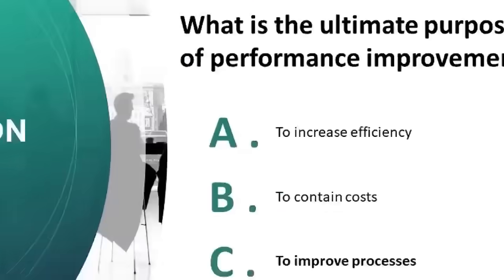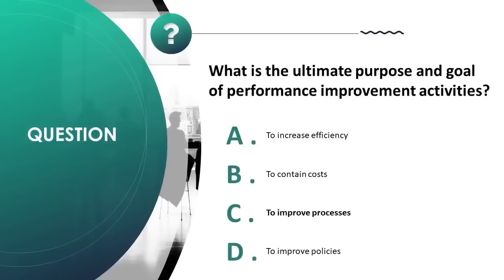What is the ultimate purpose and goal of performance improvement activities? A) to increase efficiency, B) to contain costs, C) to improve processes, D) to improve policies. Correct answer is C.